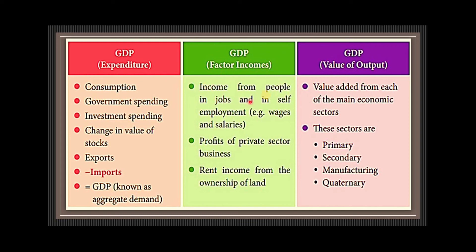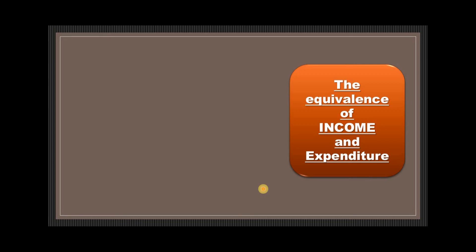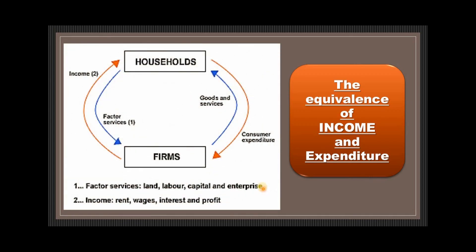In the factor income method, we use income from people in jobs and in self-employment, profits of private sector businesses, and rent income from ownership. The equivalence of income and expenditures is always used when measuring GDP or national income. We use income approaches or expenditure approaches and simplify this measure of the value of goods and services produced by measuring total income of those who take part in the production process. An alternative way to measure national income is to calculate the value of goods and services produced in the economy using the income method.